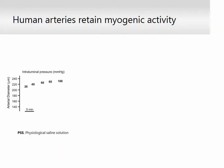Starting with myography, we first noted that freshly isolated human arteries constricted to incremental increases in intraluminal pressure. This response, known as the myogenic response, relied on extracellular calcium, as calcium-free physiological saline solution reversed arterial constriction to passive vasodilation.